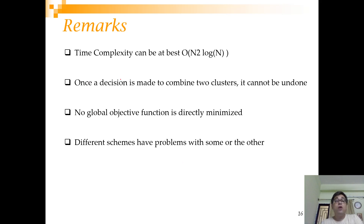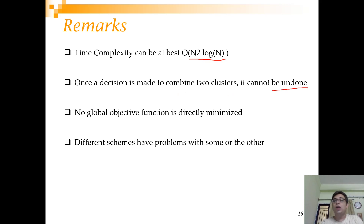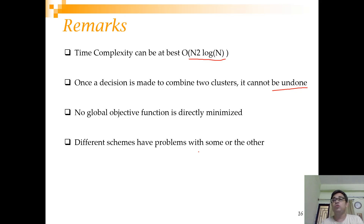For overall agglomerative clustering, the time complexity is at best O(n² log n), which is a significant problem. Also, once a decision is made to combine two clusters, it cannot be undone. There is no global objective function directly minimized, unlike k-means. Different schemes have problems with some types of data — some can find globular shapes, some are susceptible to noise and outliers, so all methods have some trade-offs.